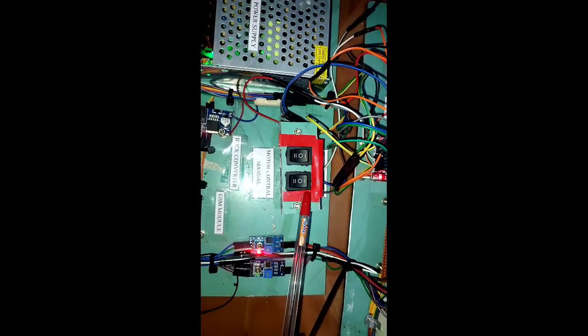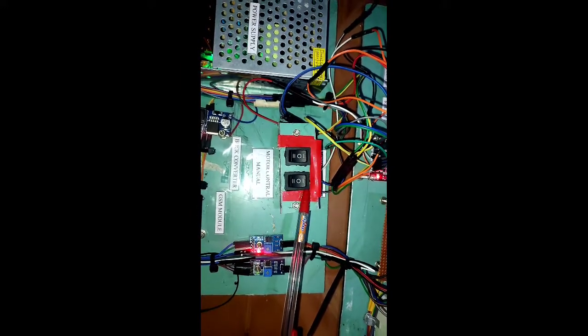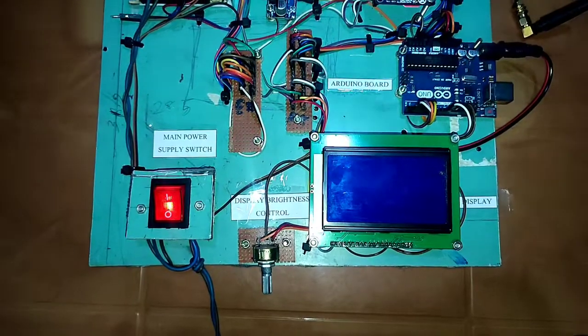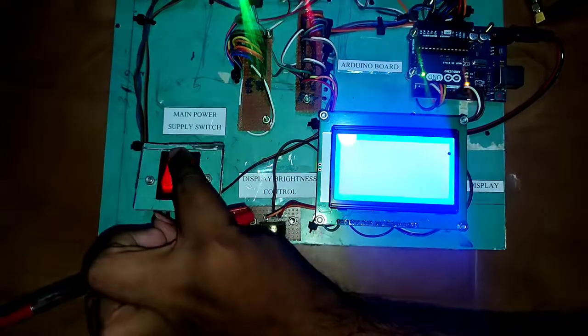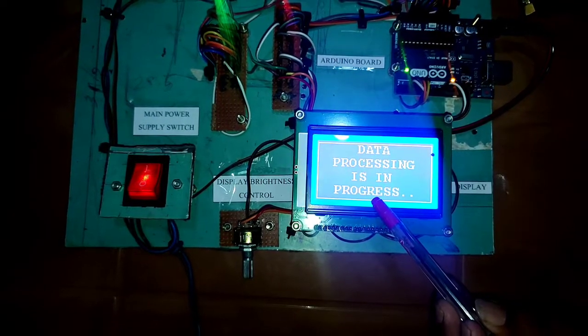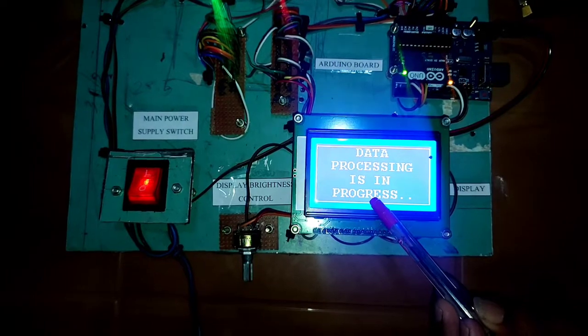We use two WD12864 display modules. This is used to represent the data to the user. We use a two position switch for auto manual operation. First, I need to power on. It takes about one minute to process data. Now, the data related to the sensors on display is displayed.